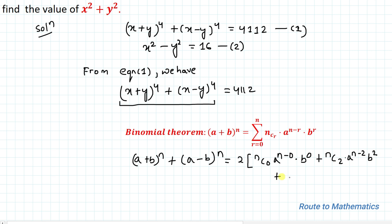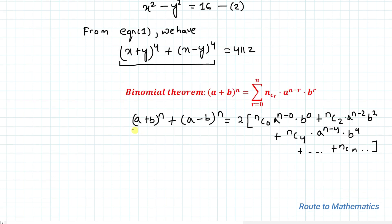The expansion continues with the term nC4 · a^(n−4) · b⁴, and so on until nCn. We will apply this expansion here, with n=4 and a, b as x and y.